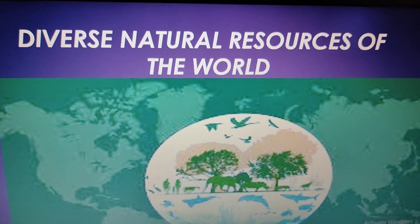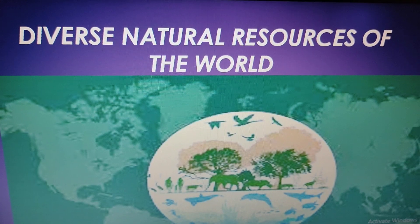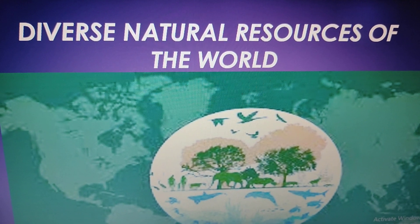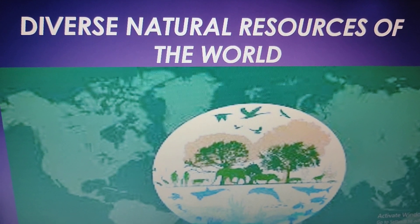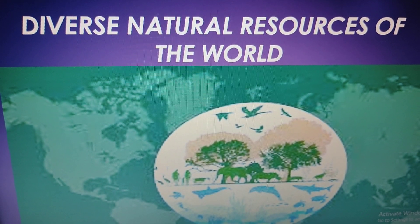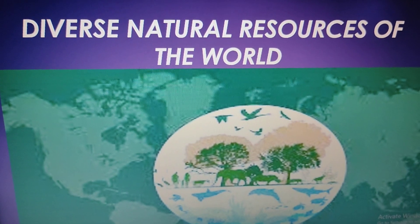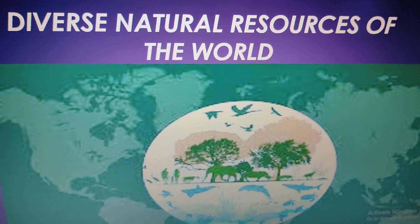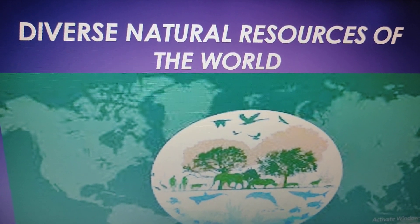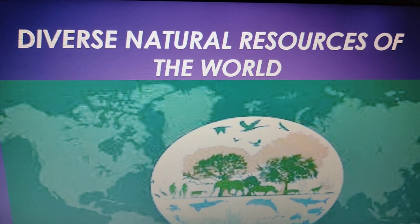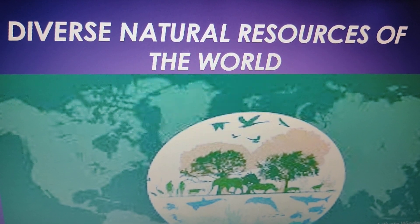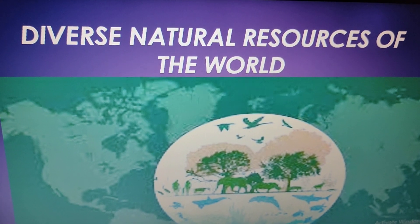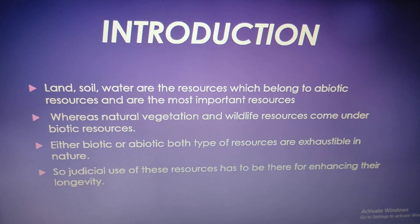Natural resources have been divided into two categories: biotic and abiotic resources. Biotic refers to the living ones and abiotic refers to the non-living things. Biotic resources are derived from living things and abiotic resources are derived from non-living things.